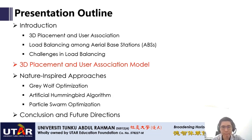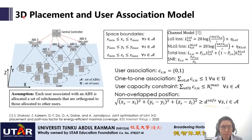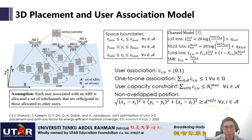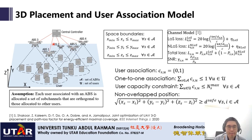I am going to talk about the 3D placement and user association model for aerial base station networks. To address the load balancing issues, we consider this 3D placement user association model. There are a number of aerial base stations and a number of users, modeled based on the 3D Cartesian coordinate system. We assume that each user is served by only one aerial base station, and each user associated with an aerial base station is allocated sub-channels different from those allocated to other users, so there is no interference.